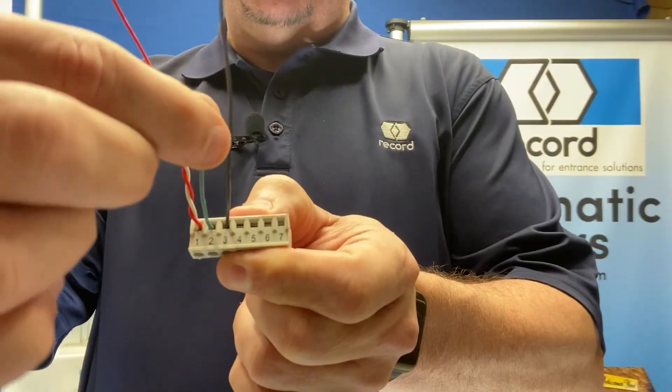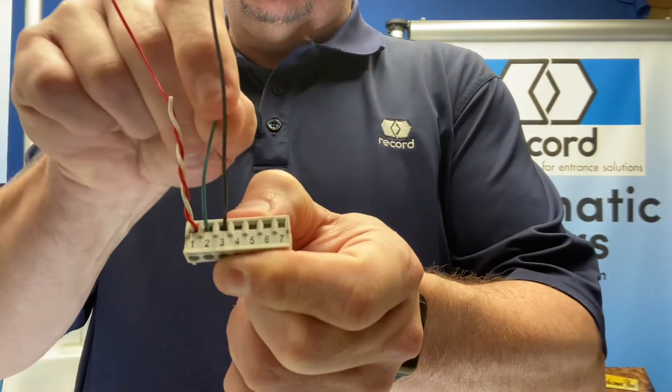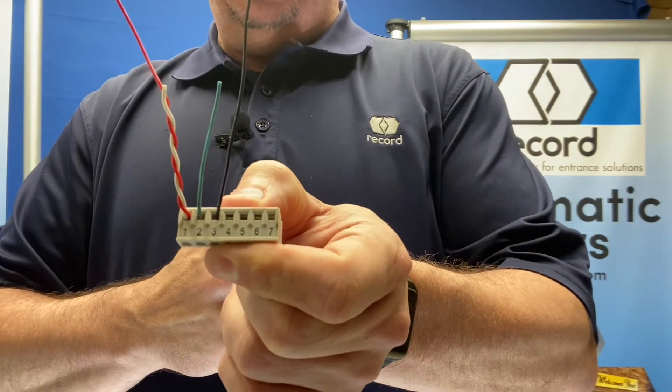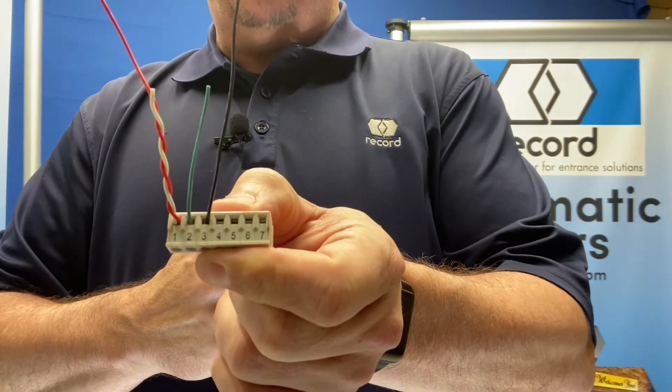Activation is green on two and that'll go to two. And then you have black to three for the negative on your 24 volt DC input.